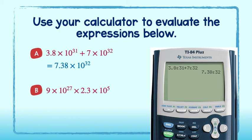Now for part B: 9 times 10 to the 27th times 2.3 times 10 to the 5th. And enter. 2 and 7 hundredths times 10 to the 33rd. Good job.